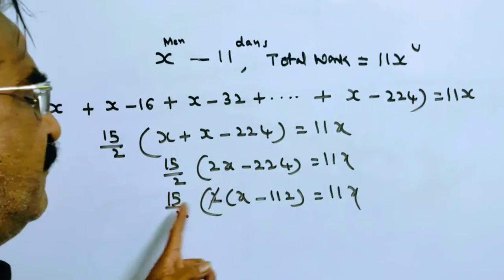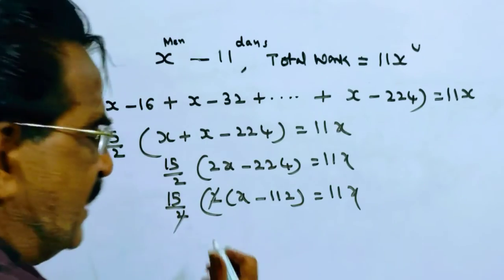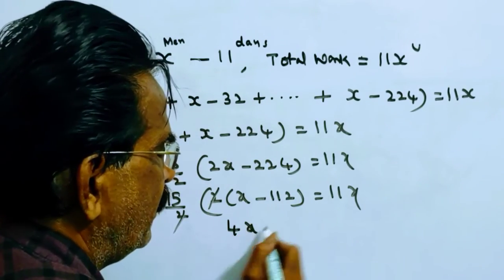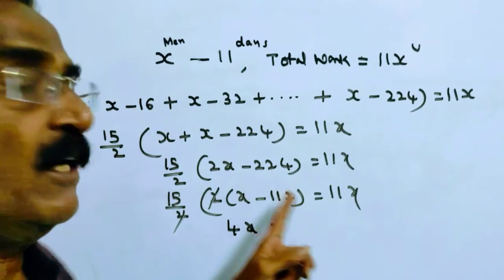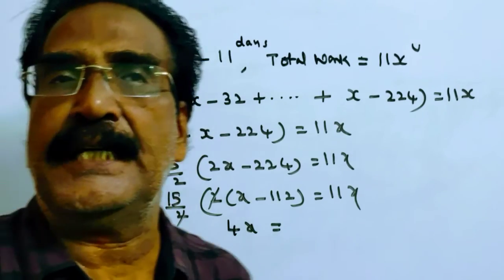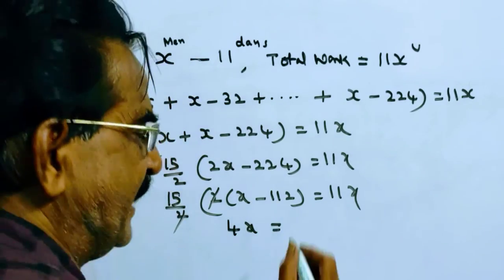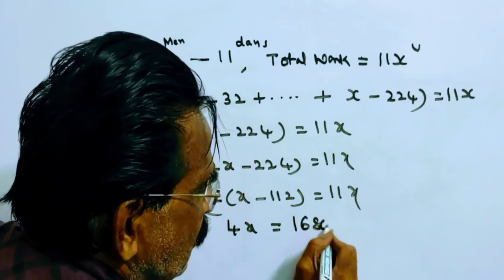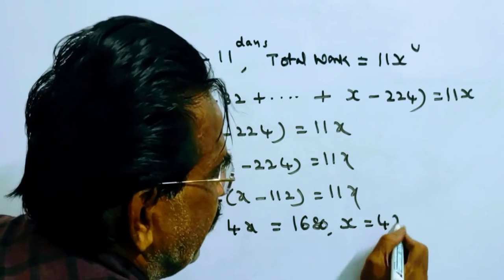2 gets cancelled. So 15X minus 11X. 4X is equal to 15 times 112. 1500 plus 180 is 1680. So X is equal to 420.